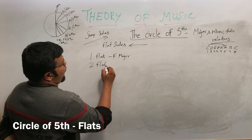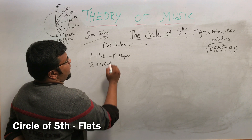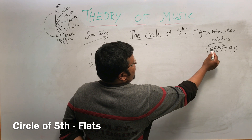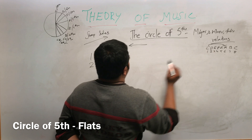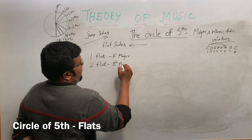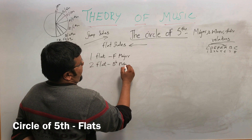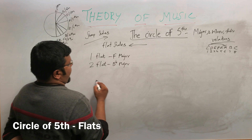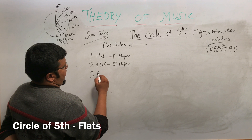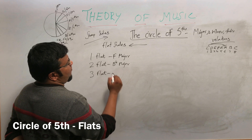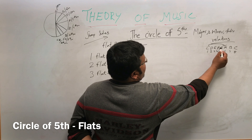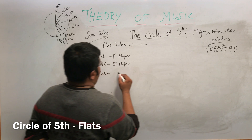From F major, the two-flat scale: counting one, two, three, four, five gives us B-flat major. And three flats, counting from B-flat: one, two, three, four, five gives us E-flat major.